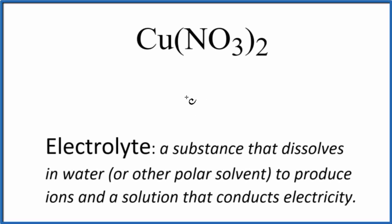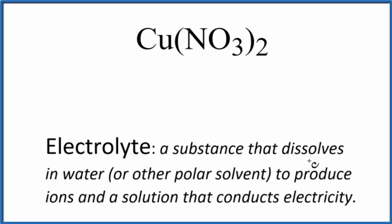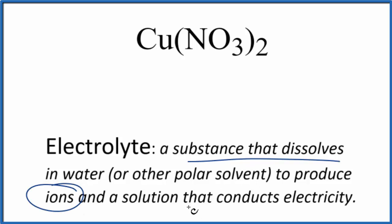In this video, we'll answer the question whether CuNO₃₂ — that's copper 2 nitrate — is an electrolyte or a non-electrolyte. An electrolyte is a substance that dissolves in water or another polar solvent and produces ions. These ions allow the solution to conduct electricity.